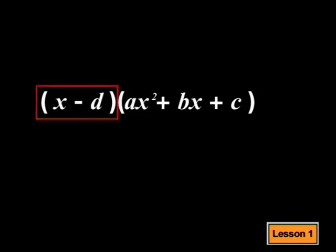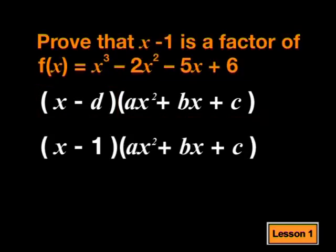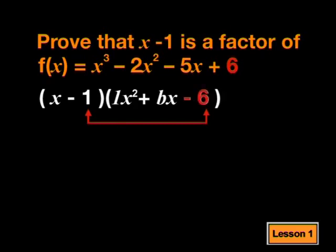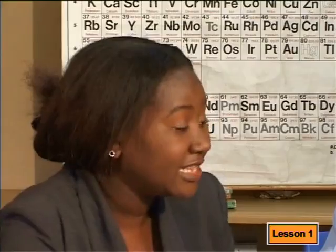That makes sense. In Grade 10, you learn that a cubic function is given by a binomial multiplied by a trinomial. We've already found one binomial factor, so we need to find the trinomial by finding the a value and the c value by inspection. By inspection, multiplying x in the first bracket with x squared in the second bracket gives the x cubed in the original expression, so a must be 1. And minus 1 must be multiplied by minus 6 to give the positive 6 in the original expression, so c must be minus 6.